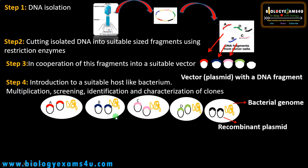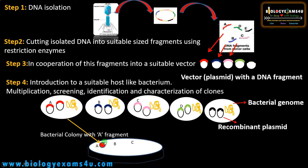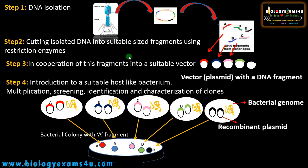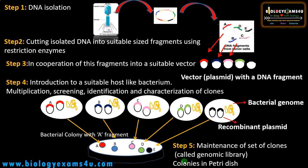After screening and characterization, we have colonies with the A gene, B gene, C gene, D gene, and E gene. Since this is a plasmid, it will replicate inside the bacteria, so many copies of that particular gene exist as colonies. We have a colony containing the A fragment, B fragment, C fragment, D fragment, and E gene. This collection of cloned DNA fragments that is maintained is called the genomic library of this phage. This phage has five genes, and these five genes are maintained as bacterial colonies containing cloned DNA fragments. This maintenance of a set of clones is called a genomic library.